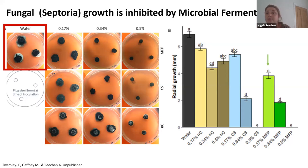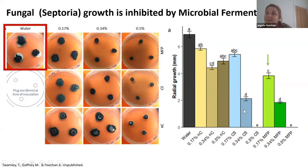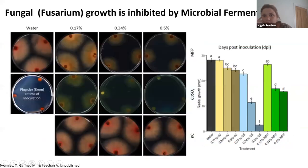Compared to the water control, adding the microbes inhibits fungal growth, and copper sulphate also inhibits fungal growth, not unexpectedly. But when you use this product, which is a mix of all these different ingredients, you get fungal growth inhibited even at quite low levels. We tested it on Fusarium as well and found similar results.